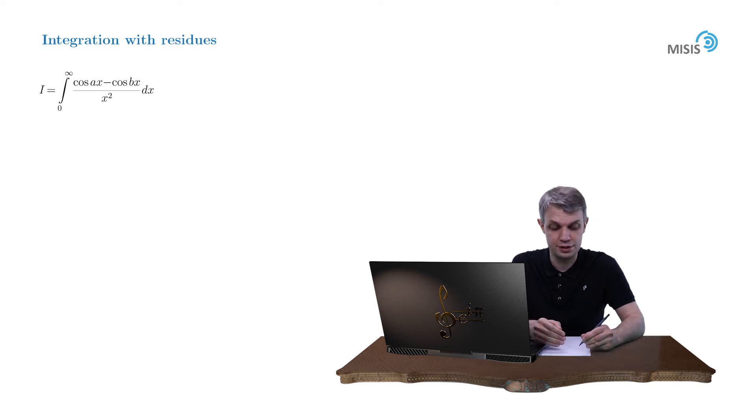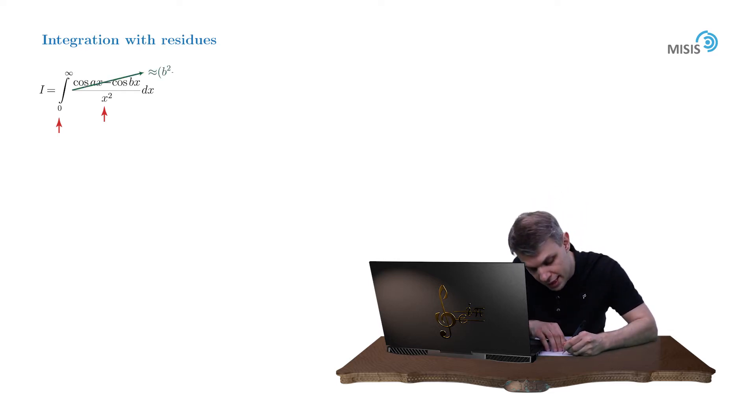The first peculiarity we should pay attention to is the behavior of our integrand in the origin. Indeed, we see that it may contain singularity due to x squared smallness in the denominator. So, to explore the behavior of the integrand near the origin, let us Taylor expand the numerator. After some cancellation, we immediately obtain b squared minus a squared times x squared over 2. We see that the singular x squared in denominator is compensated by the same x squared in numerator. Overall, the integrand is regular at the origin. Therefore, our integral is well defined, and we may continue.